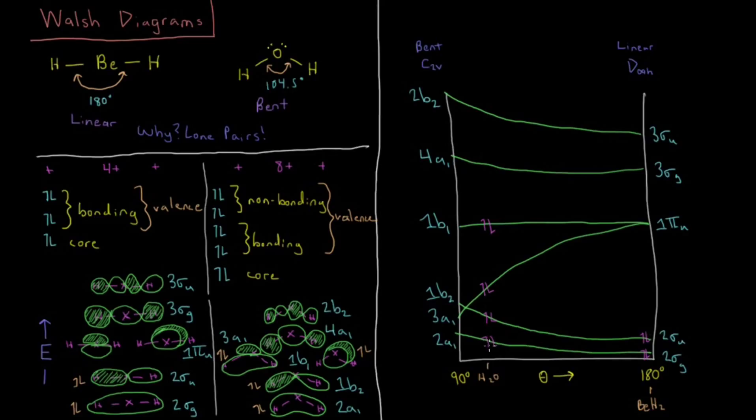So that's one caveat of these Walsh diagrams that make them not quantitatively super useful but can be helpful for some qualitative analysis is that the sum of these orbital energies is not the exact total molecular energy. But in this case, this Walsh diagram can go a long way for helping us rationalize why it is that water prefers to be bent and beryllium hydride prefers to be linear.